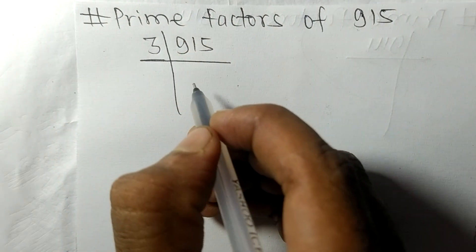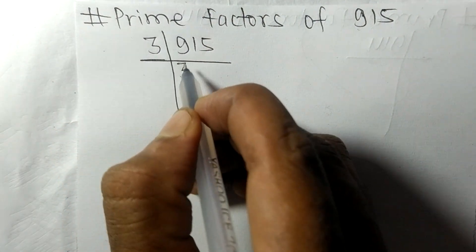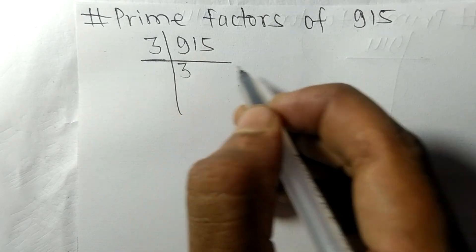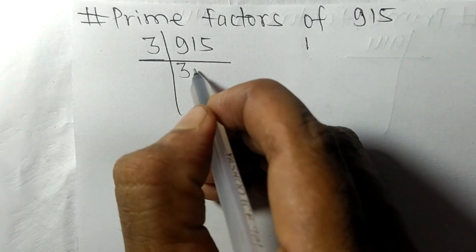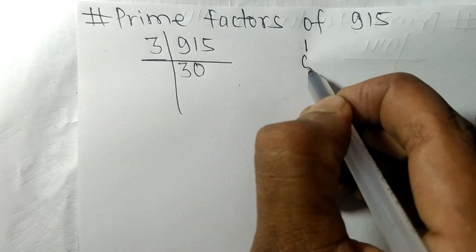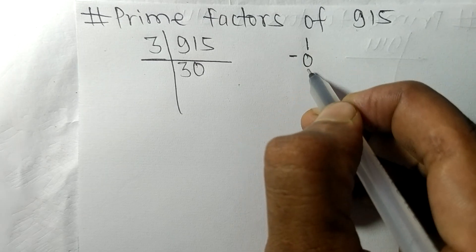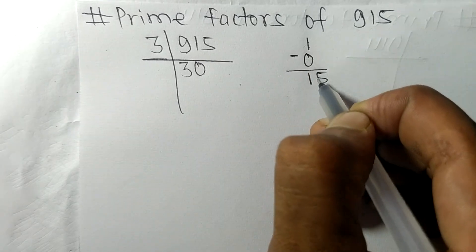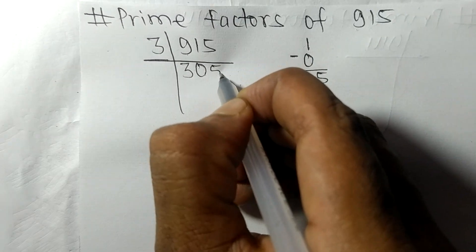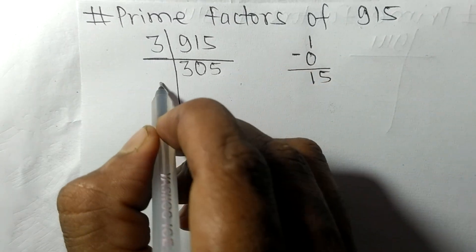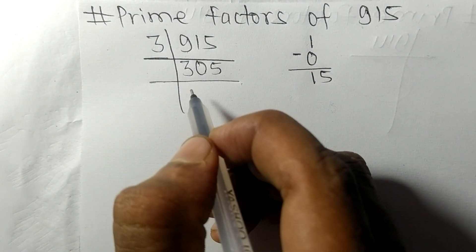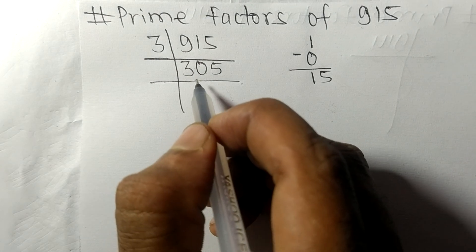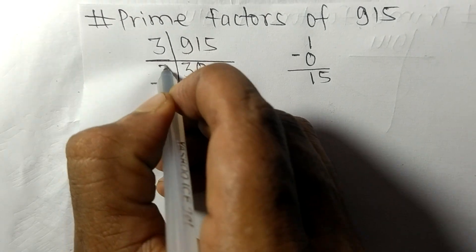by 3. 3 times 3 is 9, now we have 1. 3 times 0 is 0, on subtracting we get 1. Then 5, 15, 3 times 5 is 15. So now we got 305 which is exactly divisible by